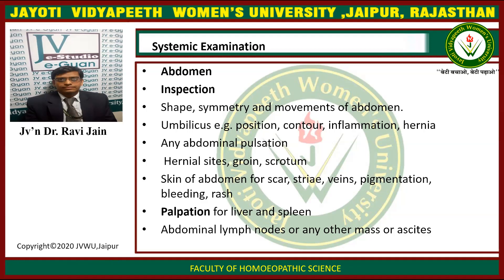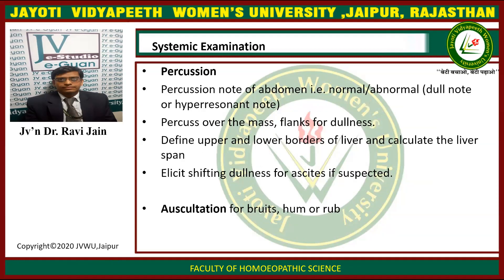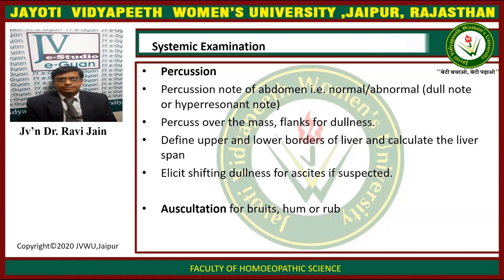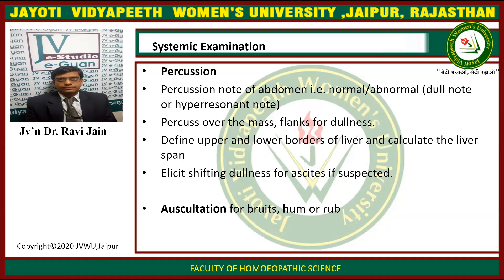Check for the palpation of the liver and spleen. While performing percussion, check for any masses or flank dullness. Define the upper and lower borders of the liver. Check for shifting dullness as a test for ascites.